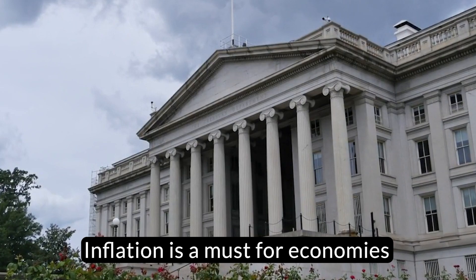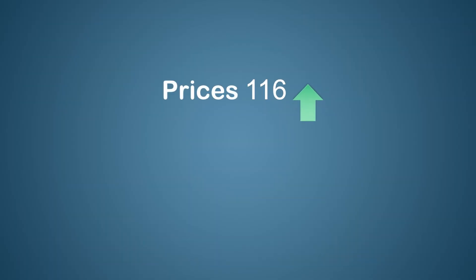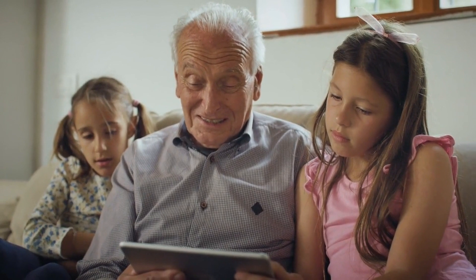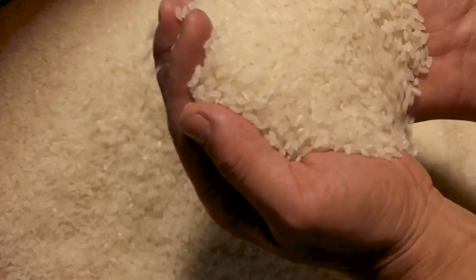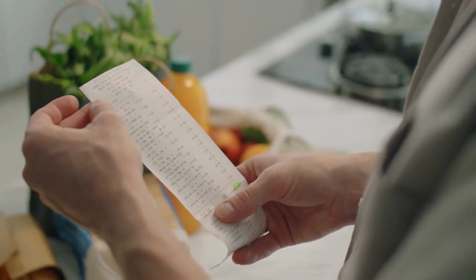As prices of products go up, what you can buy with the same amount of money will reduce over time. If you speak to your parents or grandparents, they will tell you about times when they could get kilograms of rice with just one rupee. Now there is literally nothing you can get for one rupee.